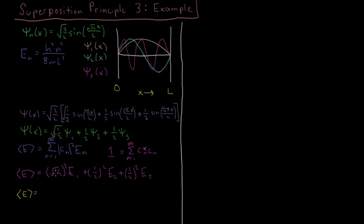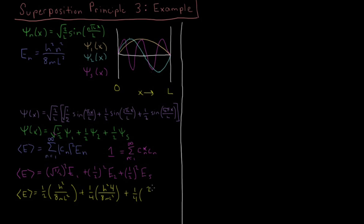This becomes: 1 half times E_1, which is h² over 8ml², plus 1 fourth times E_2, which is 4h² over 8ml², plus 1 fourth times E_5, which is 25h² over 8ml².